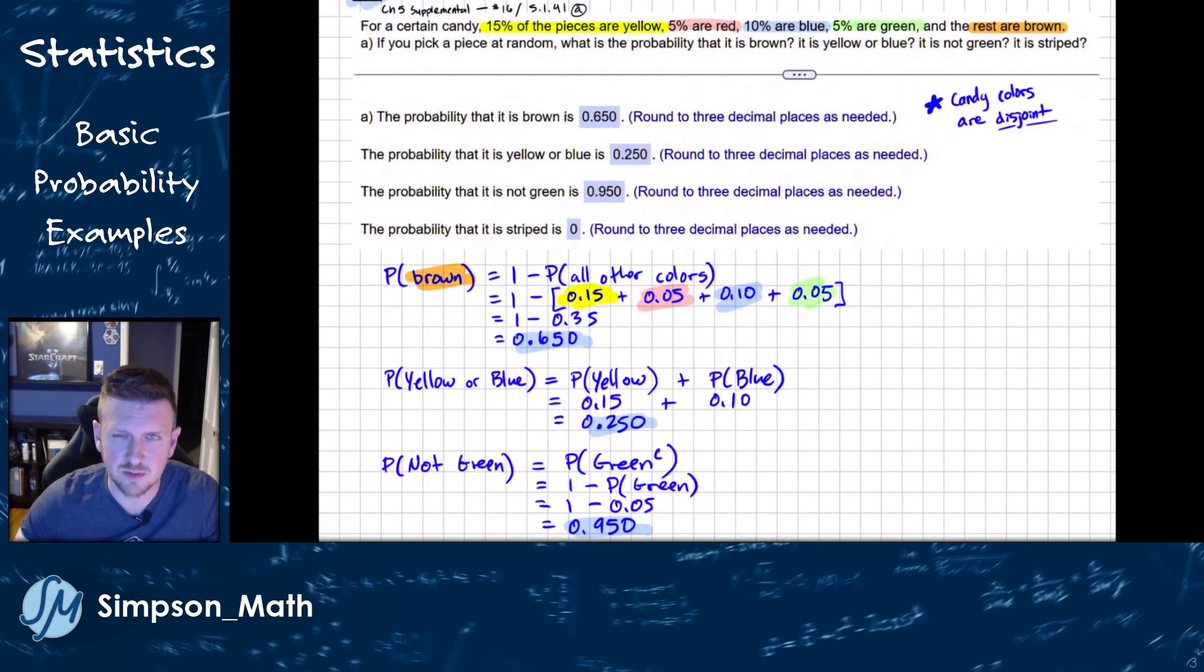Lastly, the probability that it's striped. Well, striped isn't one of my options. They're just solid colors. So the likelihood I reach into this bag of candy and pull a striped is a 0% or proportion also zero.